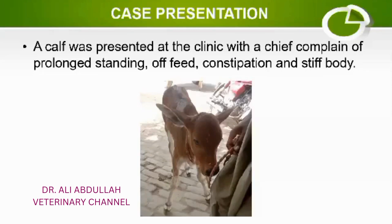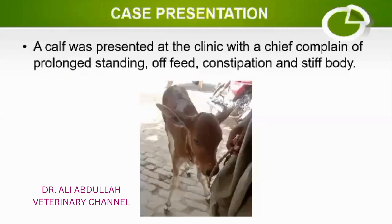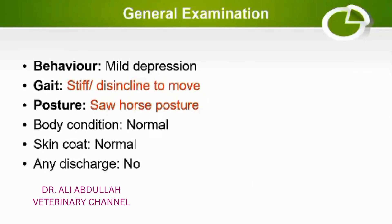Stiffness of the body indicates that this animal is suffering from some sort of spasm. On physical examination, the behavior of the calf was mildly depressed, but its gait was very stiff due to spastic paralysis. The posture was very typical, called the 'sawhorse posture,' in which the forelimbs are moved forward, the hindlimbs moved backward, and the neck is extended. Body condition and skin coat were normal with no discharge.